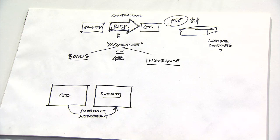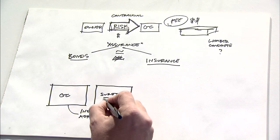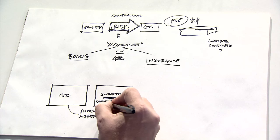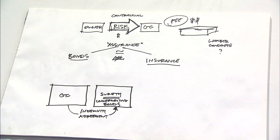And there's a relationship here that has to be developed through what's called an indemnity agreement. What the indemnity agreement does is it establishes the relationship between the surety and the general contractor, and it says that the surety is willing to consider the underwriting of bonds for the general contractor in exchange for a premium.